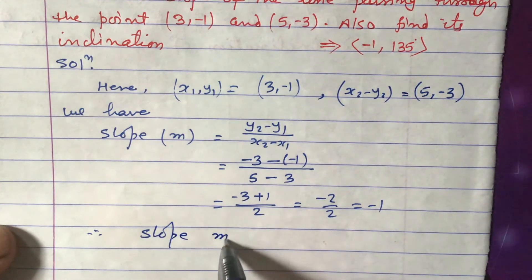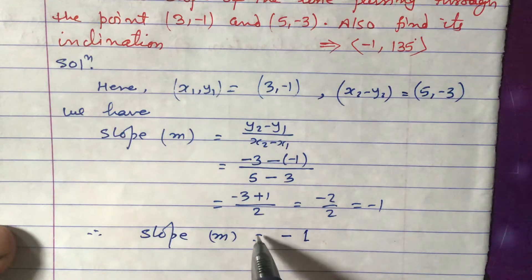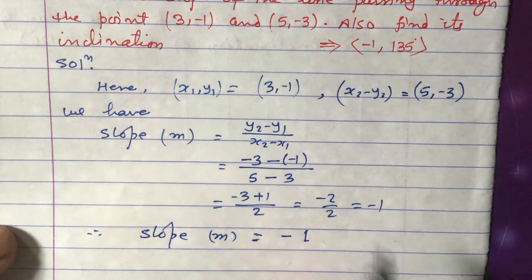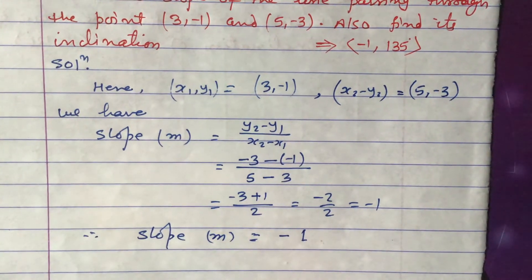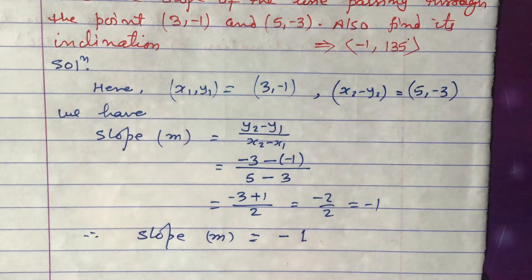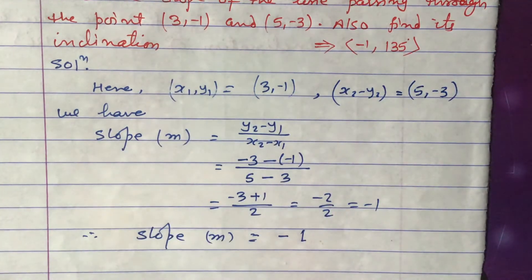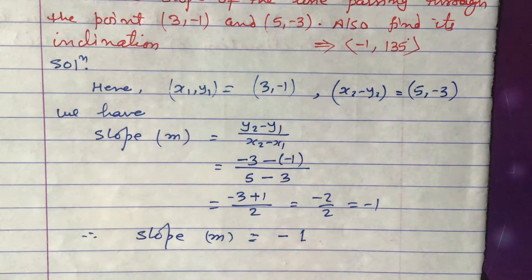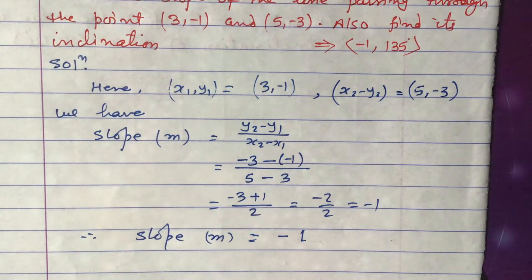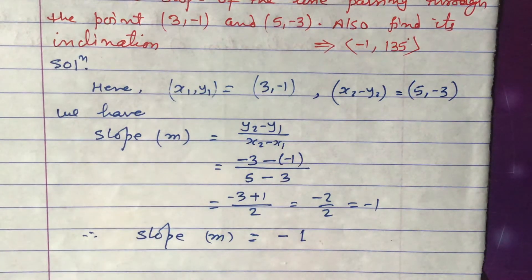Therefore, slope m is equal to minus 1. We got the slope. Now our second part is to find the inclination. Inclination is the angle made by the straight line with the x-axis in the anti-clockwise direction.